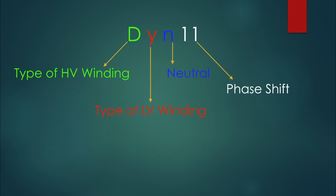D indicates delta connected primary winding. Y indicates star connected secondary winding with neutral point and 11 indicates the phase shift. So 11 is equivalent to 30 degrees. But the question comes how 11 is equivalent to 30 degrees. So let's find that out.